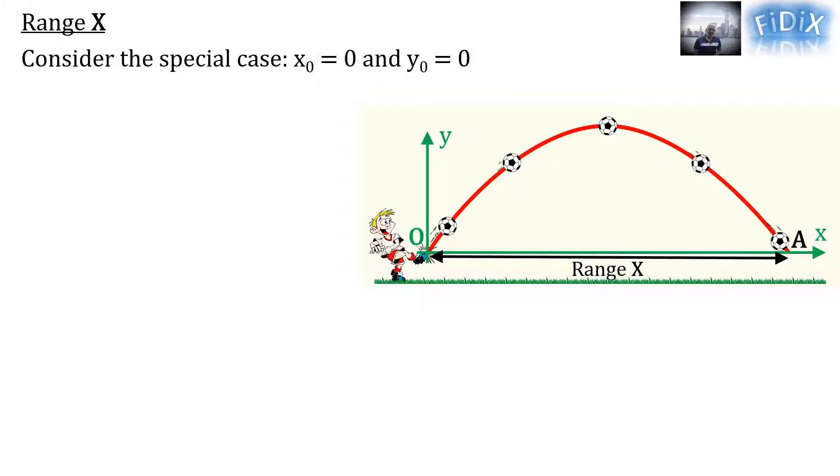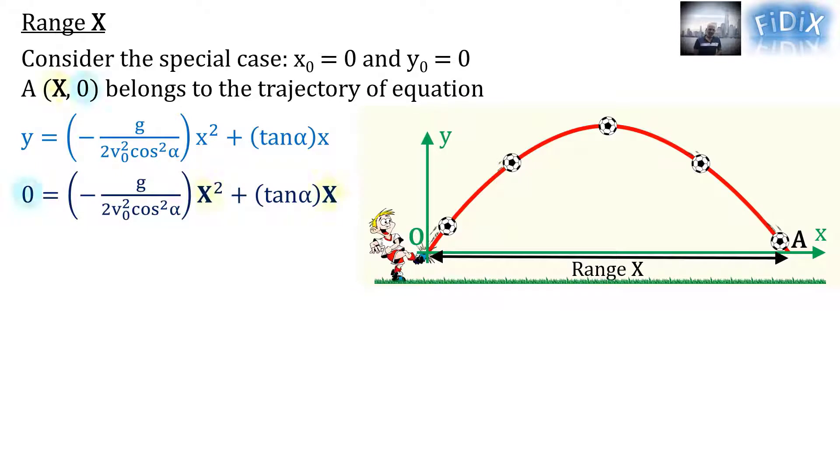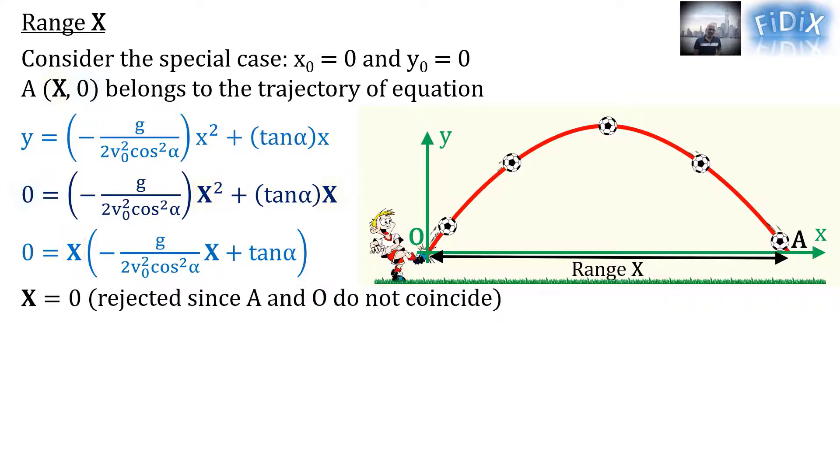This point belongs to the parabolic trajectory having this equation. Thus its coordinates satisfy this equation, which can be written with the common factor X. One of the roots of this equation is X equals zero. This solution is rejected since A and O do not coincide.